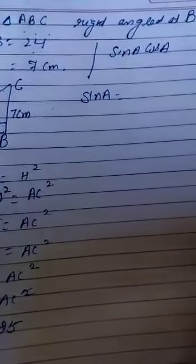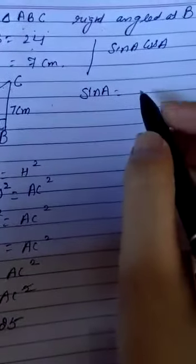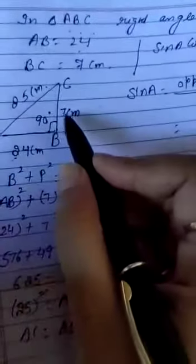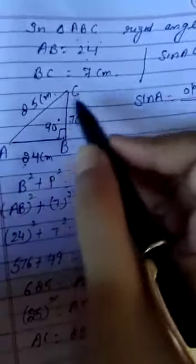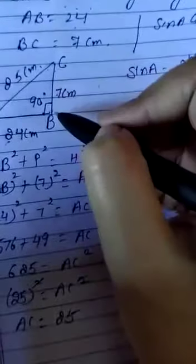Now we find the value of sin A. We know that sin theta equals opposite side of theta divided by hypotenuse. Here, on the place of theta we have angle A, so sin A equals opposite side of angle A divided by hypotenuse. Looking at the figure, the opposite side of angle A is BC and the hypotenuse is AC. So, sin A equals BC upon AC, which is 7 upon 25.